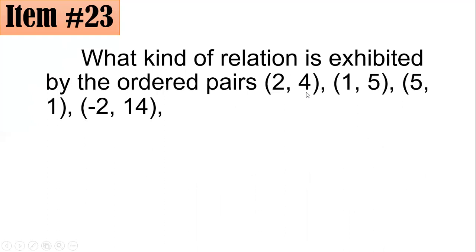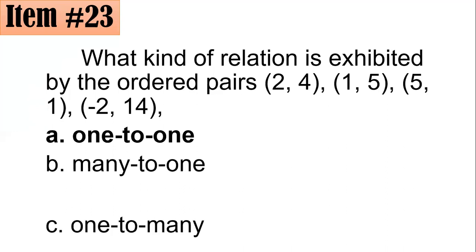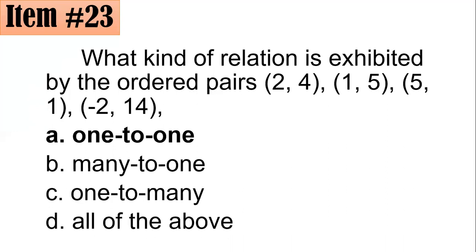Among the ordered pairs, there's no ordered pair that's repeated. And if you check their abscissas or the x-coordinates - 2, 1, 5, -2 - they are all distinct from one another. This tells us that this is a one-to-one relation. Therefore the correct answer is letter A.